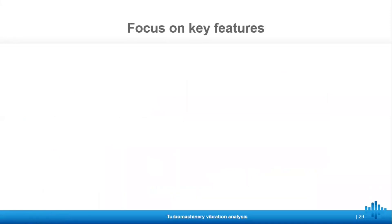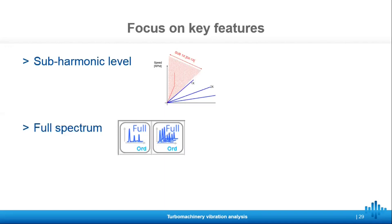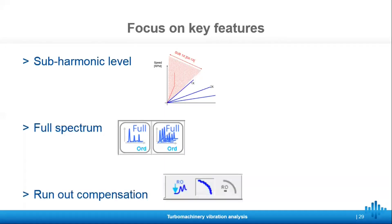We just saw the waterfall, Bode plot, shaft centerline, and orbit — these are the basic results we need to perform a good analysis of the machinery. Now let's take a look at some of the key features dedicated to turbine analysis. There is subharmonic level, which is an estimation of the energy below the first order, full spectrum, and runout compensation, which we'll cover more in the next few slides.